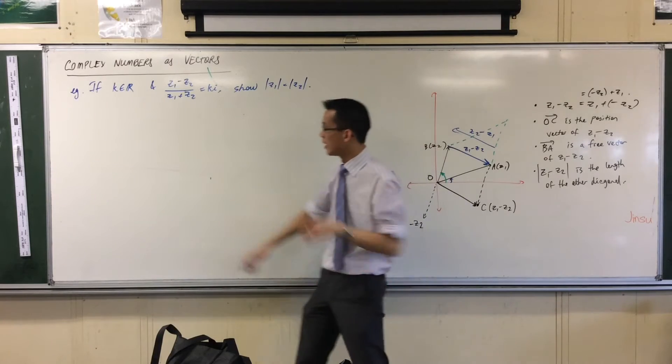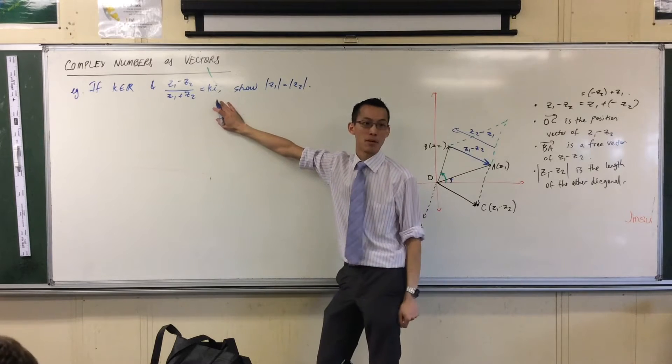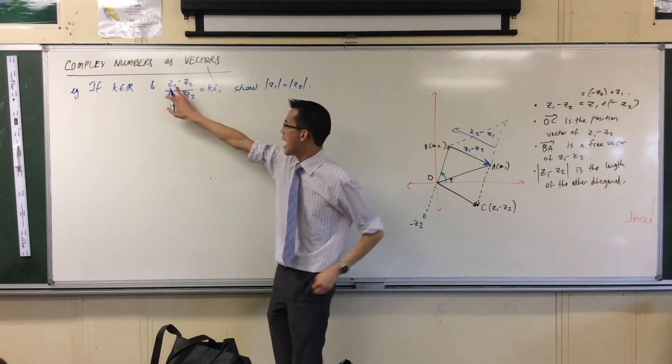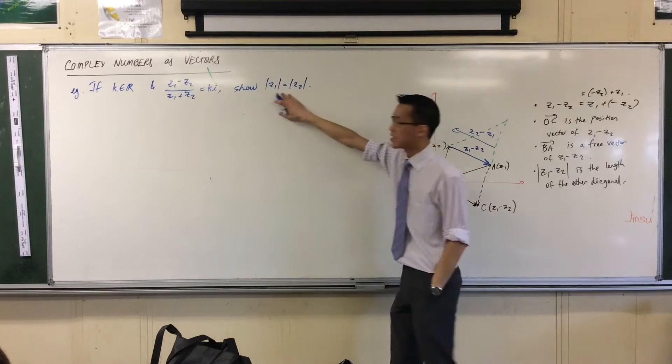You get given two conditions, namely that k is some real number here that I'm multiplying by i, and then you've got all of this garbage in here that multiplies apparently to a purely imaginary number. And then this is what they want you to show, something to do with two moduli.